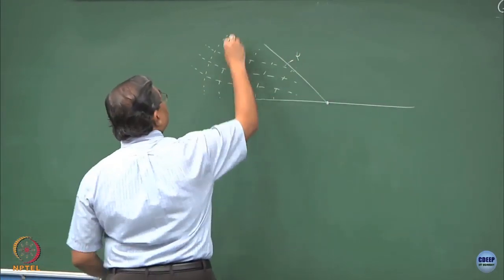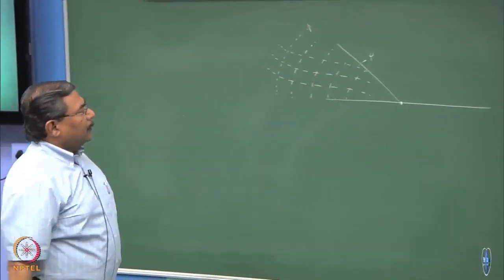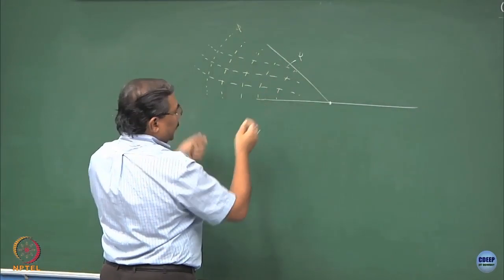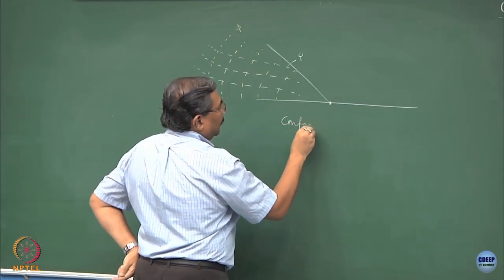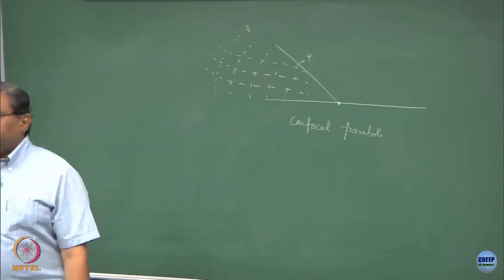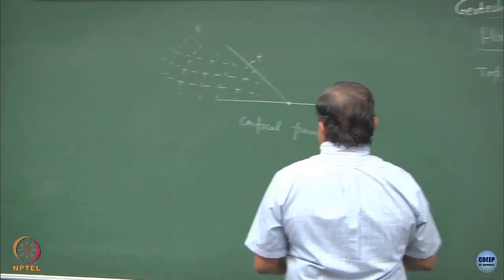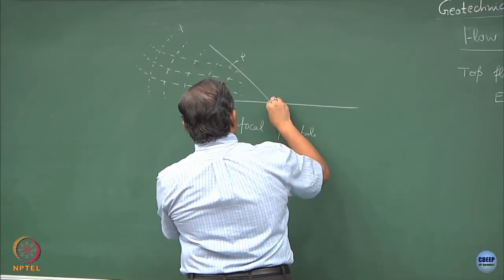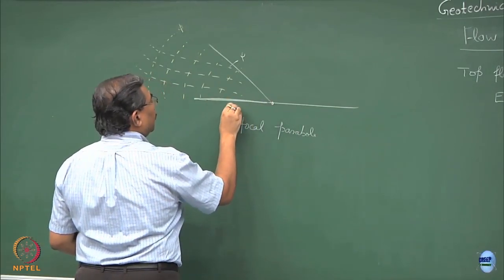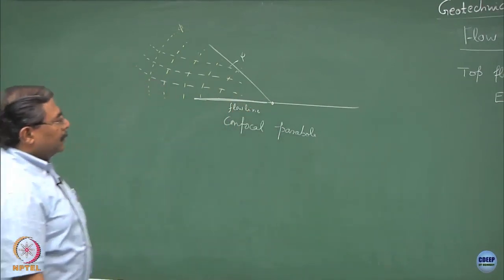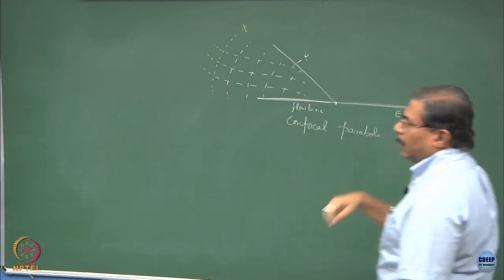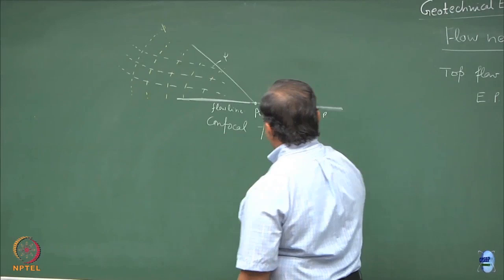This is the psi function and this is the phi function. What you are observing here is that this is going to be a set of confocal parabolas. Now, suppose I consider this point — this is what is going to be the bottom flow line. And if this is connected to the atmosphere, this is going to be the equipotential line. So at point A, I have the singularity.